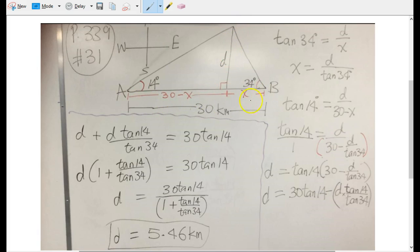The whole AB is 30 kilometers, so we do not know this part of the triangle. That's the challenge, but we have to use a variable to represent what we do not know and then use algebra to solve for x.